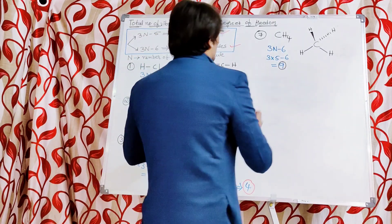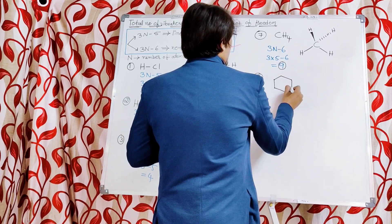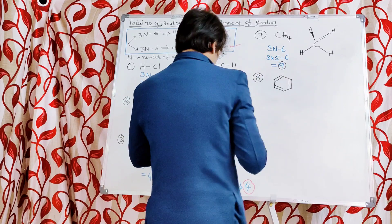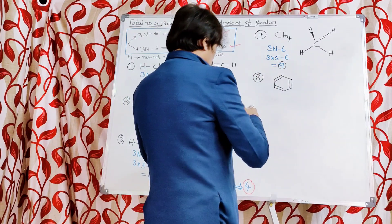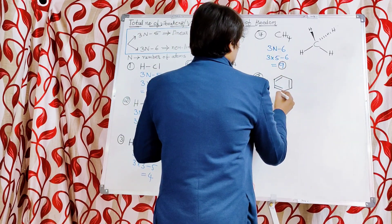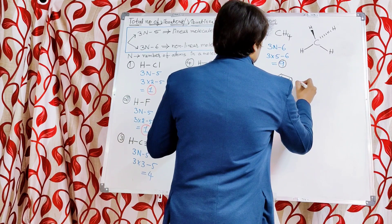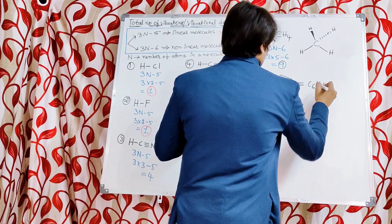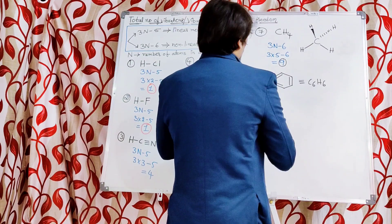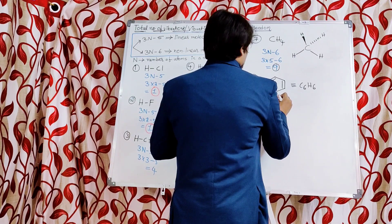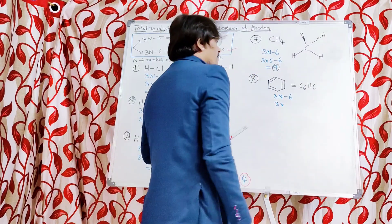Let us discuss one more example: benzene. From its structure it is amply clear that benzene is a nonlinear molecule. The molecular formula is C₆H₆. Since it is a nonlinear molecule, the formula applicable to calculate its vibrational degrees of freedom is 3N minus 6. N is the total number of atoms.